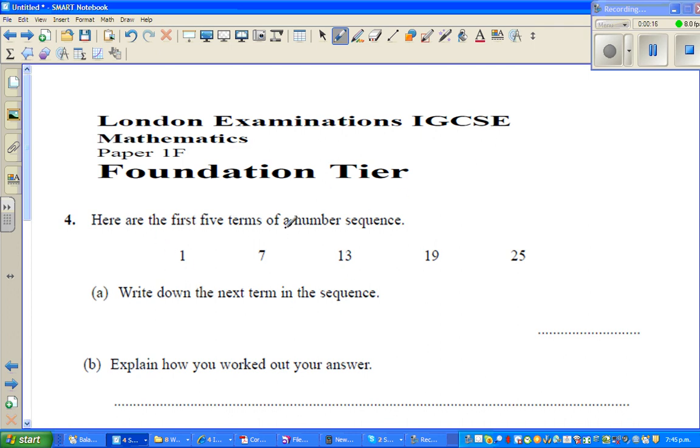So here are five numbers, five terms of a number sequence: 1, 7, 13, 19, 25.